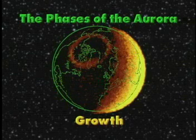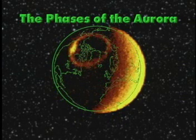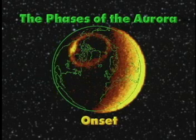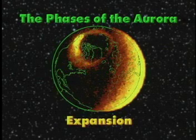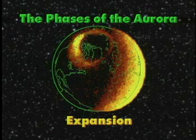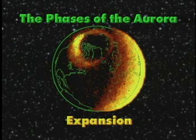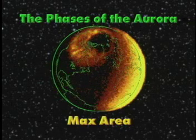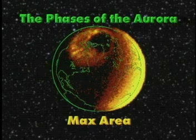This is called the growth phase. The activity truly begins with a small spot of light or onset event, followed by the lighting up of the whole ring and an expansion to a more poleward location. The large bright region you can see is called the auroral bulge.